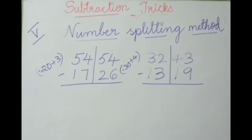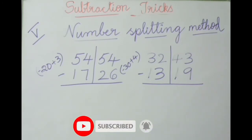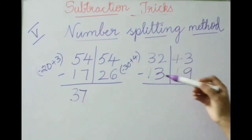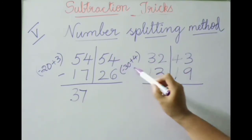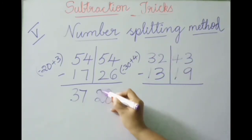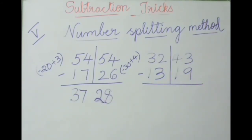See the fifth method: number splitting. In this method we split the number into two parts so that subtraction can be done quickly. Example: five thousand four hundred fifty-four minus one thousand seven hundred twenty-six. Split as 54|54 minus 17|26. For 54 minus 17: write 17 as minus 20 plus 3 — fifty-four minus twenty is thirty-four, plus three is thirty-seven. For 54 minus 26: write 26 as minus 30 plus 4 — fifty-four minus thirty is twenty-four, plus four is twenty-eight. Total answer is 3728.